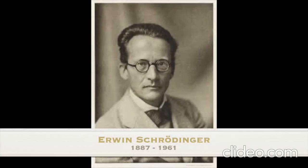Erwin Schrödinger was an Austrian-Irish physicist. In 1926, he was able to calculate the probability of an electron being in a certain location outside the nucleus.